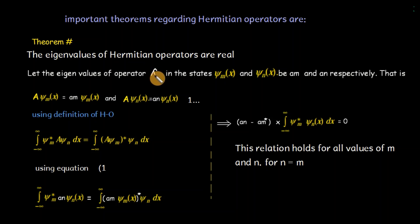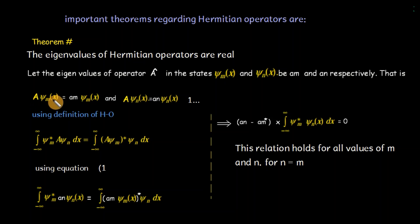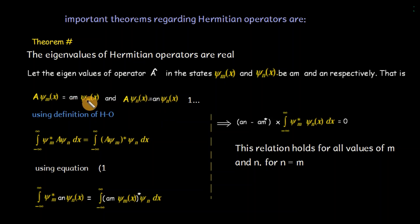Theorem 1: The eigenvalues of a Hermitian operator are real. If the eigenvalues of Hermitian operator A in states psi_m and psi_n are a_m and a_n respectively, then: A psi_m = a_m psi_m, and A psi_n = a_n psi_n. These are the eigenvalue equations we have discussed in the postulates. If the operator is Hermitian, then its eigenvalues will be real.